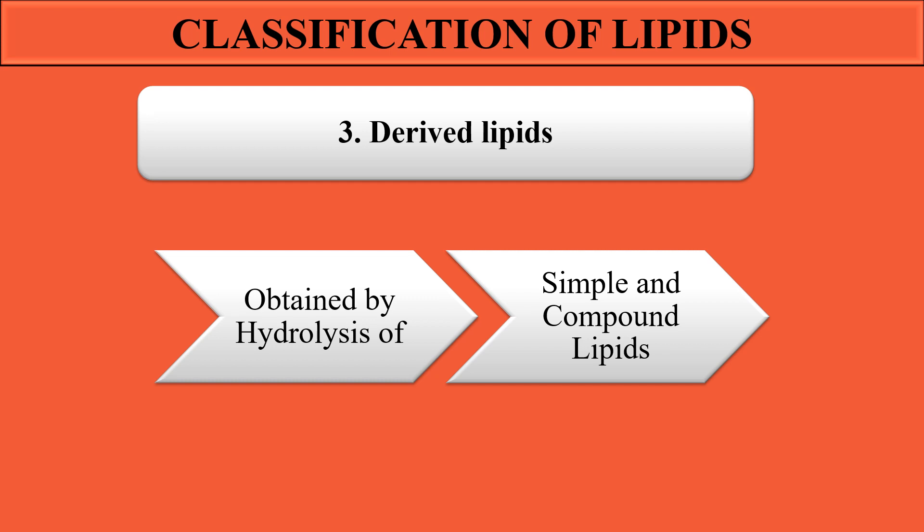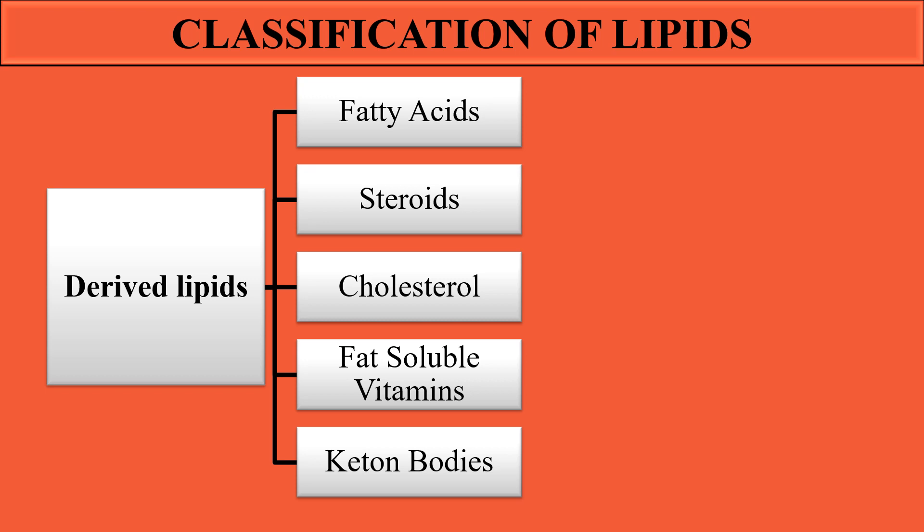When simple and compound lipids are hydrolyzed through different mechanisms and processes, they give rise to derived lipids. These derived lipids are considered a form of lipids, though not directly. The derived lipids obtained by hydrolysis of simple and compound lipids include fatty acids, steroids, cholesterol, fat-soluble vitamins, and ketone bodies.